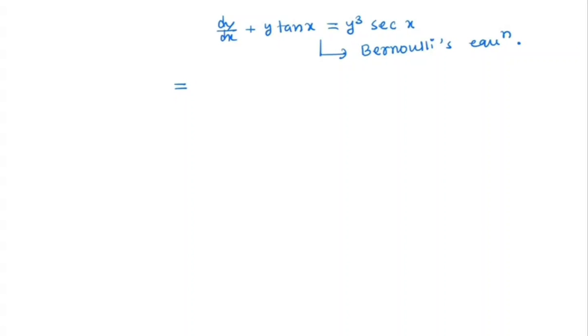So here what we will do, first we will divide this equation by y to the power 3. So we get y to the power minus 3 dy/dx plus y to the power minus 2 tan x equal to sec x.